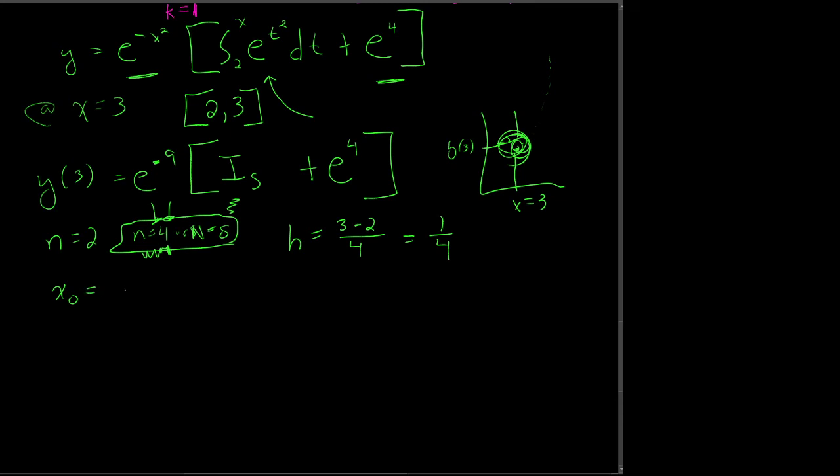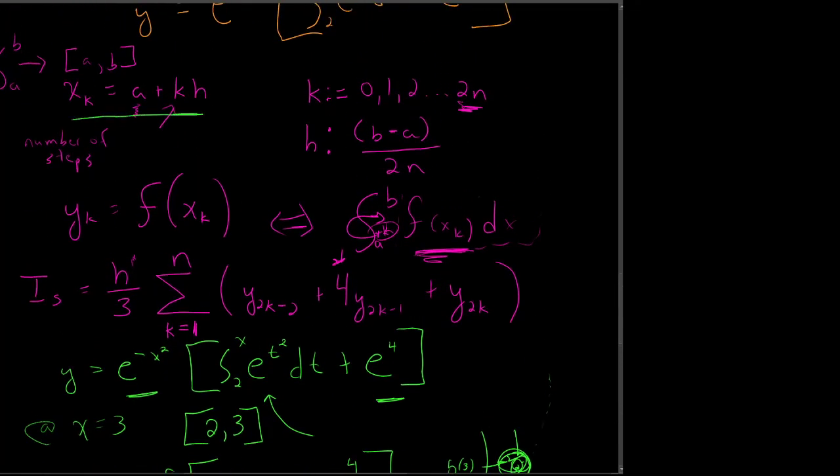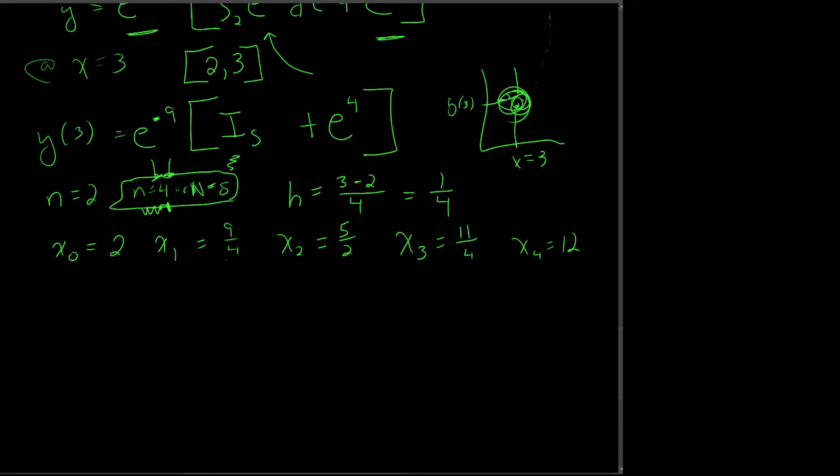I'm going to write out ahead of time all my x values. x₀ is going to be 2, x₁ is going to be 9 fourths, x₂ is going to be 5 halves, x₃ is going to be 11 fourths, and x₄ equals 3. This process says I can create a list of x values that's going to start at a and end at b with a certain step size. Step number 0 is 2, step number 1 my x is 9 fourths, and so I make a list of all the x values I need.